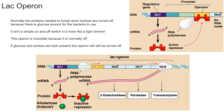That makes sense because if you have glucose around, you don't need to break down lactose. This operon is called inducible because it's normally off, but it can be induced when there is high lactose and no glucose around.